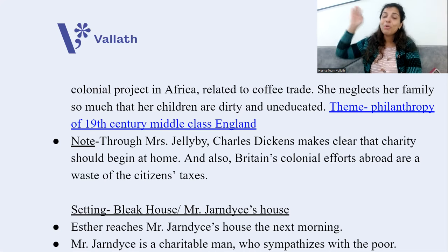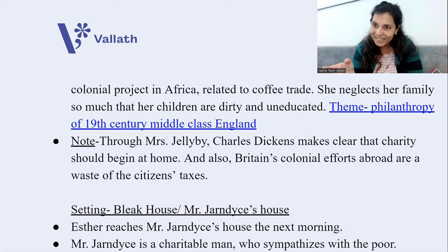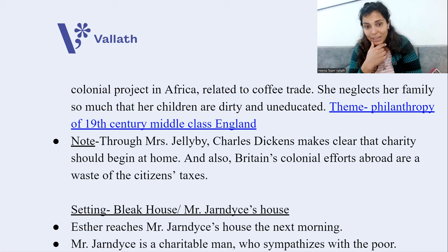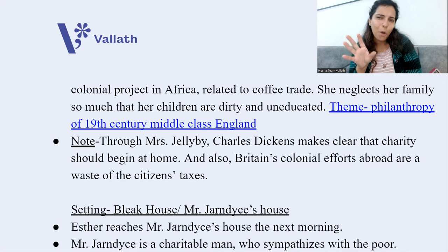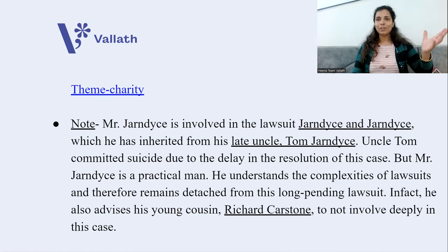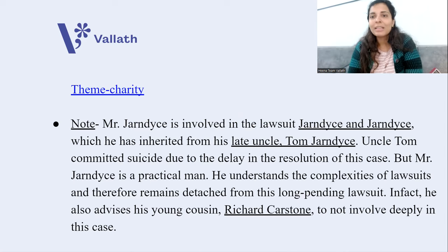The next day the setting changes to Bleak House — the name of Mr. Jarndyce's house in London. Esther reaches there the next morning, meets Mr. Jarndyce, and instantly takes a liking to this old man who is charitable and sympathizes with the poor. The theme here is charity. Mr. Jarndyce is connected to the lawsuit Jarndyce and Jarndyce, which he has inherited from his late uncle Tom Jarndyce.